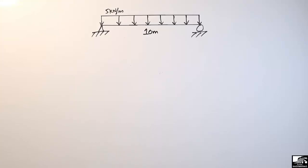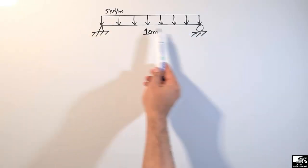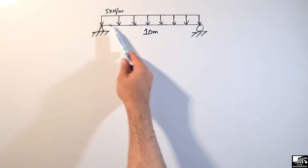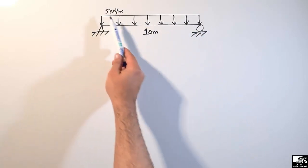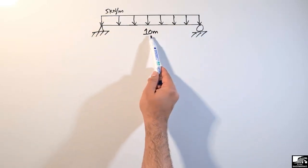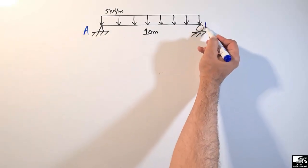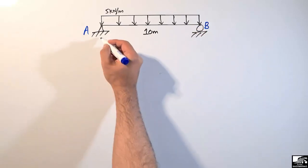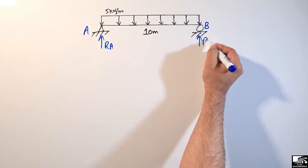Welcome to 7 Engineering YouTube channel. In today's lecture, we are going to solve a simply supported beam with a uniformly distributed load acting on it with a magnitude of 5 kilonewton per meter. The total length of the simply supported beam is 10 meters. We label the supports as A and B, which provide reactions RA and RB respectively.